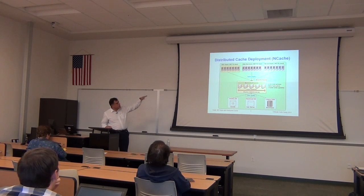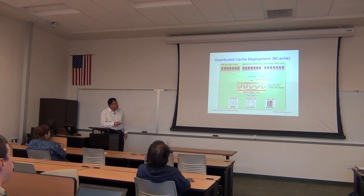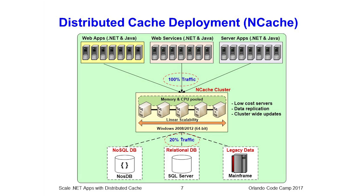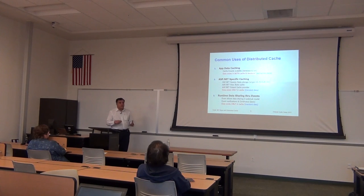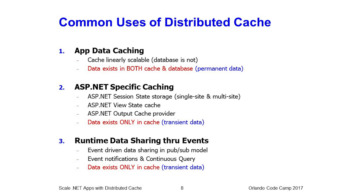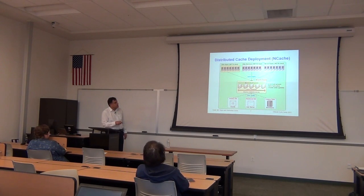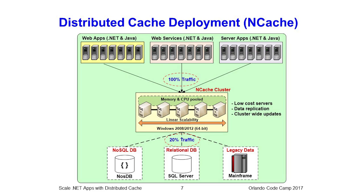The goal so far is to convince you that by having a caching tier you will no longer have a scalability bottleneck. Whichever caching solution you use, you must incorporate a caching tier in your application architecture. Now that we're convinced you should use a cache, as a .NET developer the next question is: where should you use it and how? The first use case is application data caching — you have application data in a database and you cache it so you don't have to go to the database as frequently.